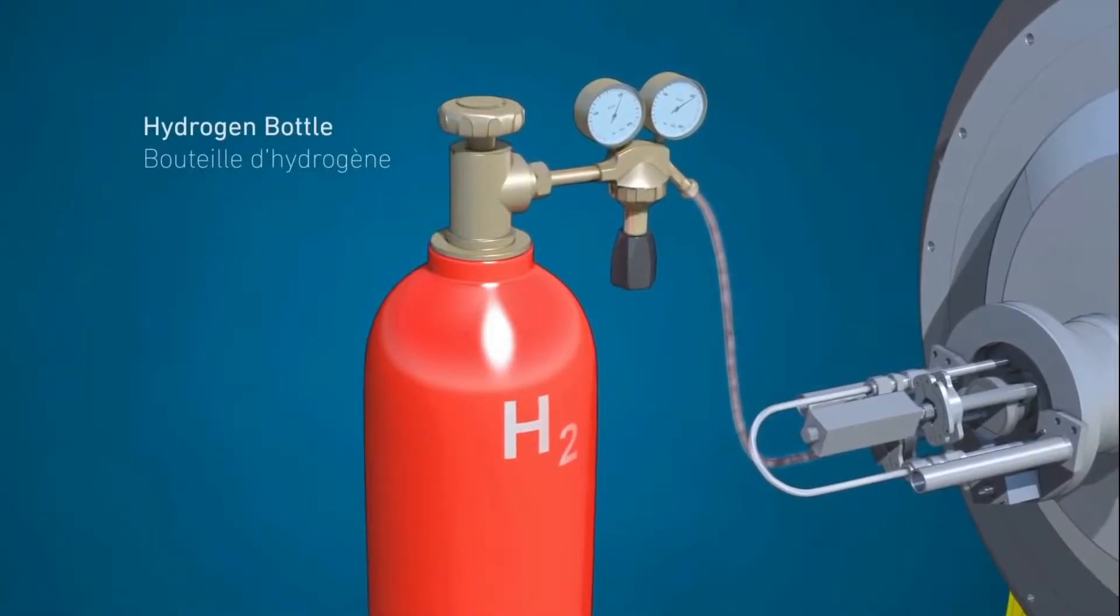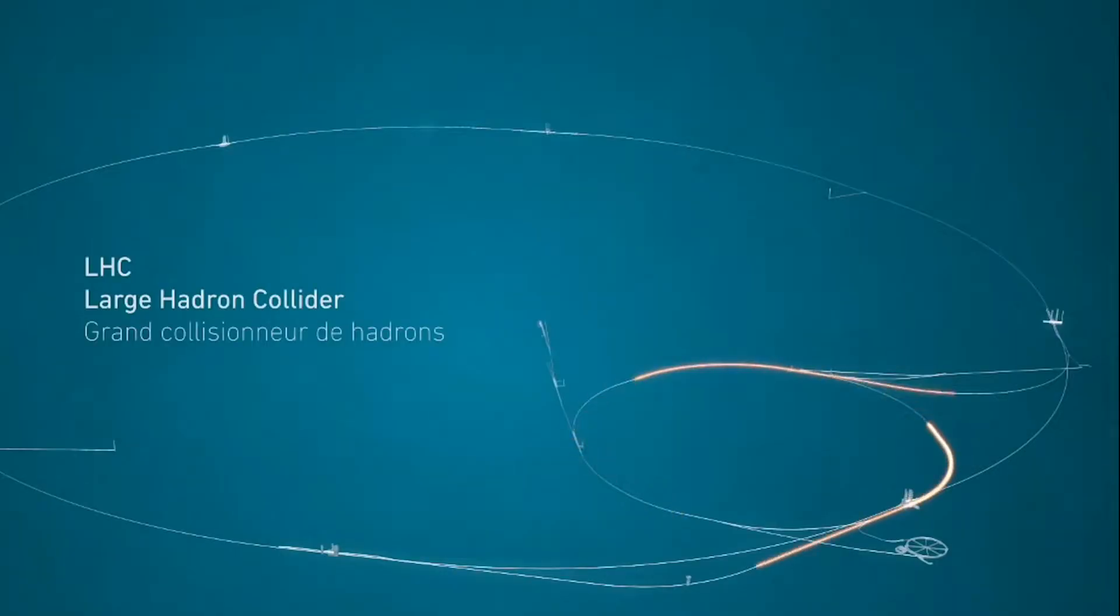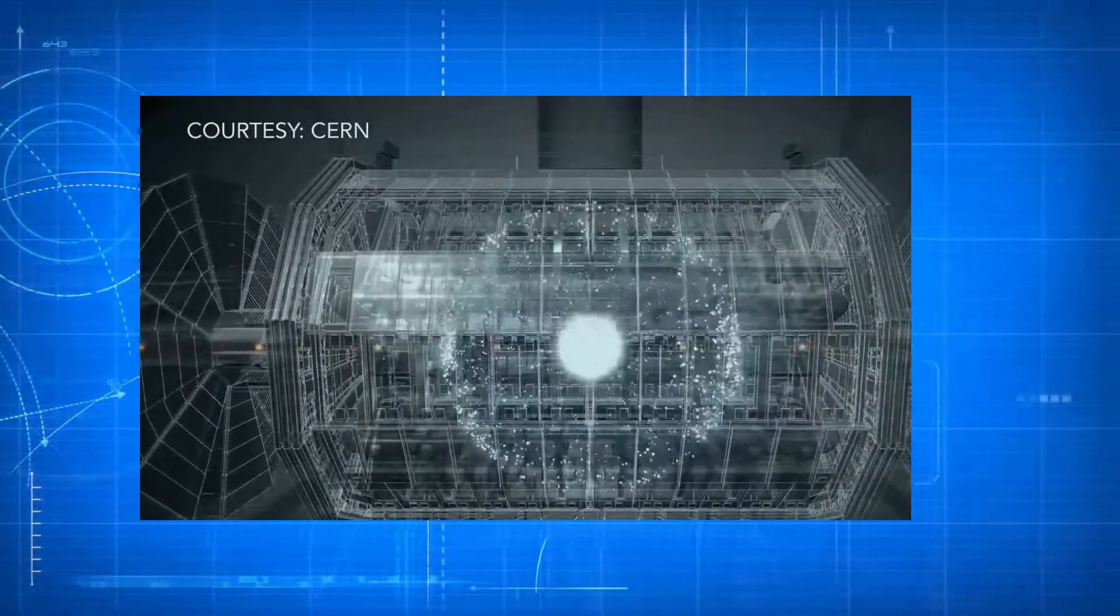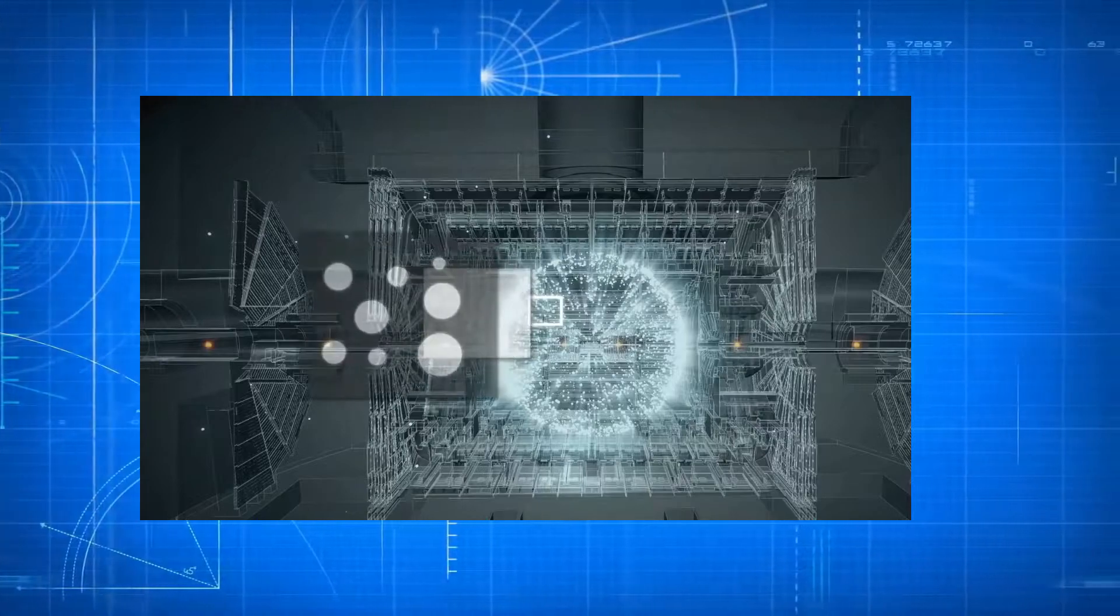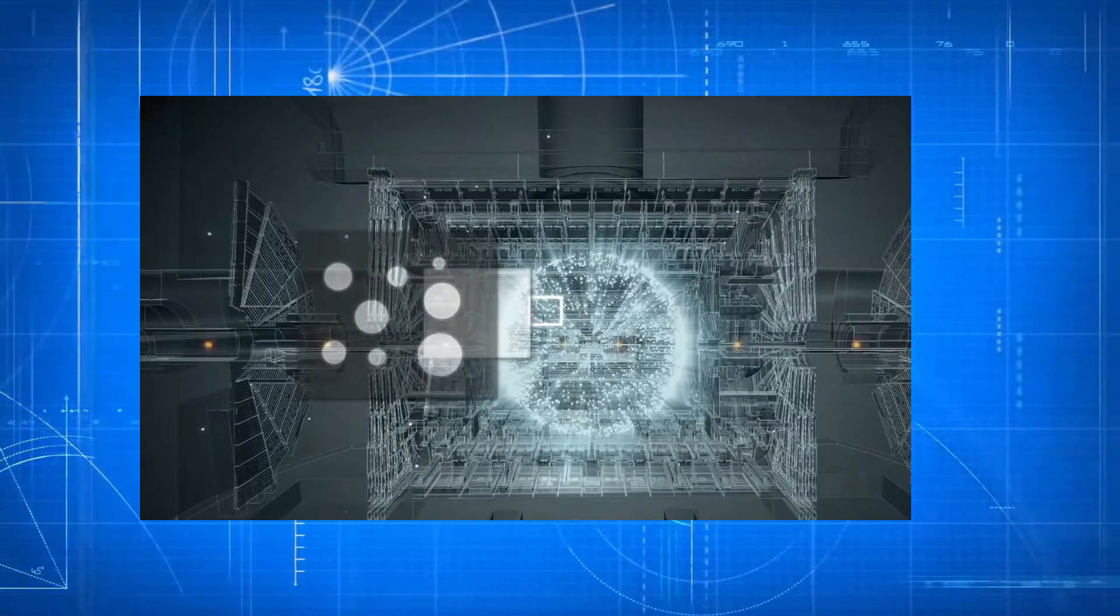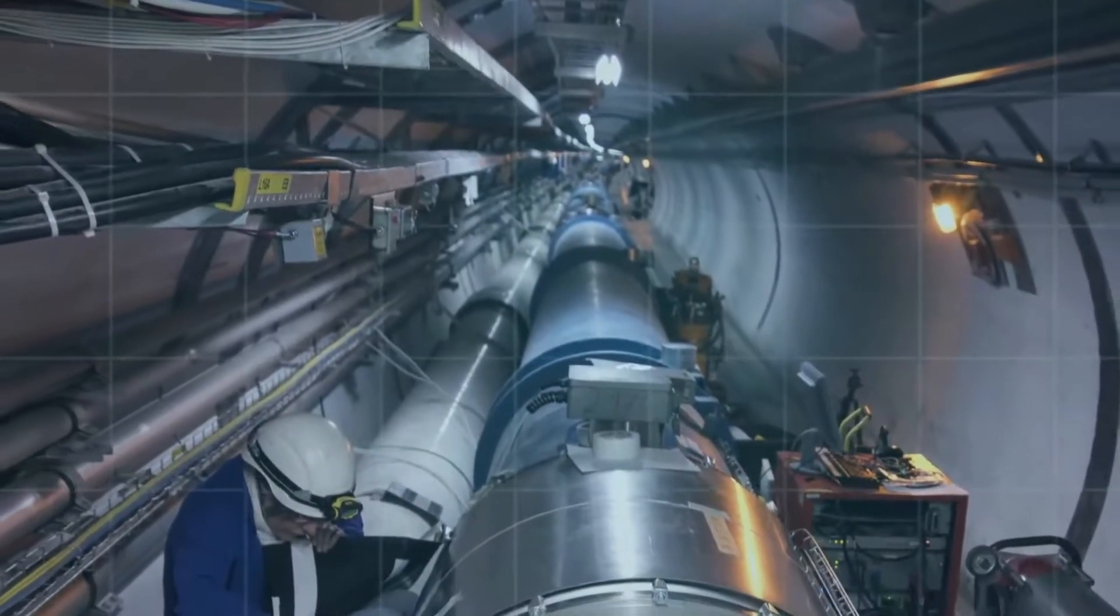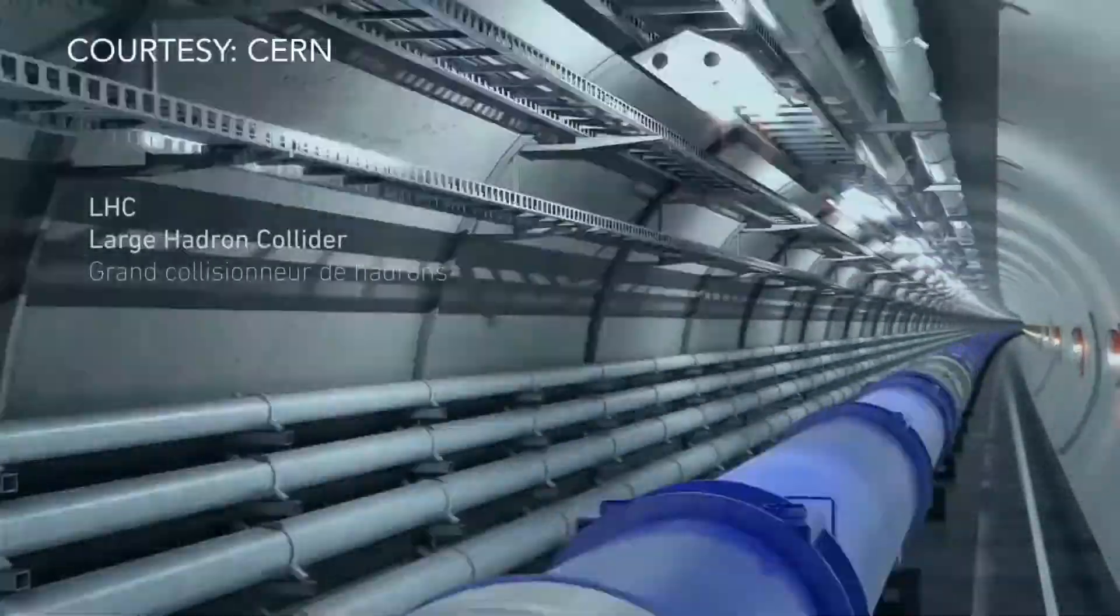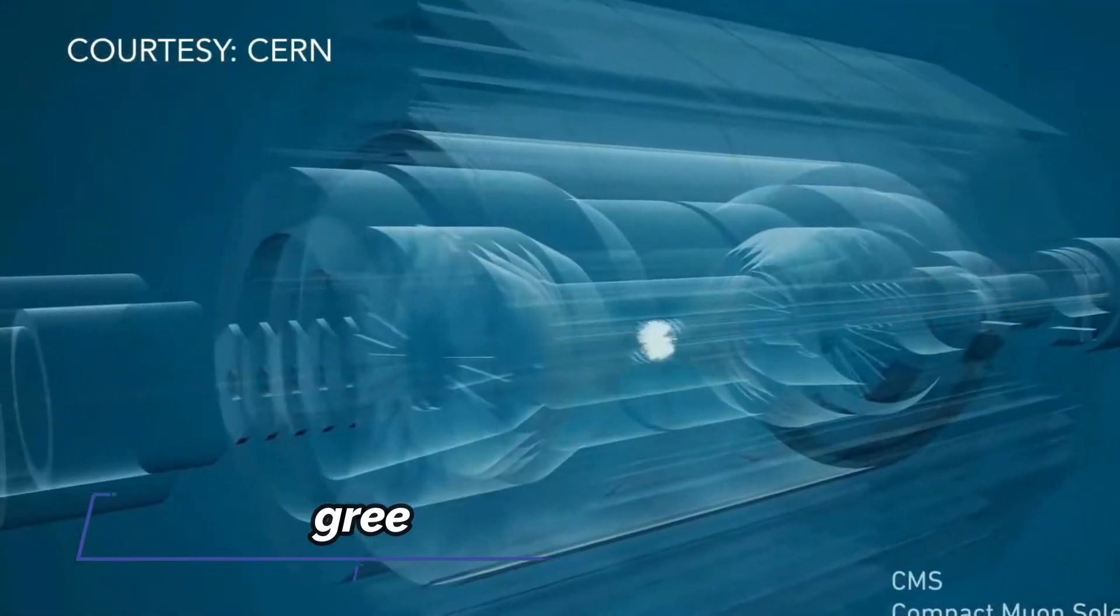Inside the accelerator, two high-energy particle beams travel at close to the speed of light before they are made to collide. The beams travel in opposite directions in separate beam pipes, two tubes kept at ultra-high vacuum. They are guided around the accelerator ring by a strong magnetic field maintained by superconducting electromagnets. The electromagnets are built from coils of special electric cable that operates in a superconducting state, efficiently conducting electricity without resistance or loss of energy. This requires chilling the magnets to minus 271.3 degrees Celsius, a temperature colder than outer space.